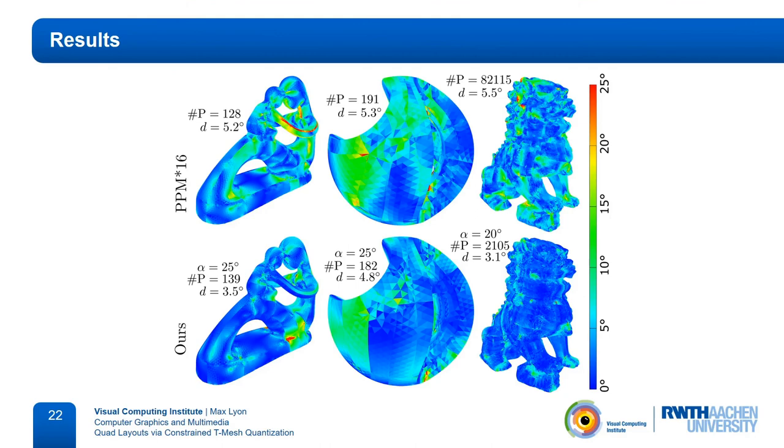Here we compare the quality of the resulting integer grid parameterization with those of Pietroni and colleagues. The color shows the angular difference per triangle between the final parameterization and a given cross field that specifies the intended directions. With D, we state the average of these deviations over the whole mesh. We can see that with a similar number of patches, we achieve less deviation. The reason the number of patches is so large for the top-right model is that the original result of Pietroni contains t-junctions, which we extended until the layout was conforming.